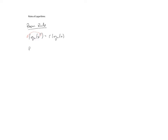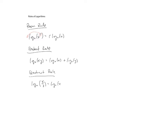The product rule says that if we have log base a of x times y, that this is the same as log base a of x plus log base a of y. The quotient rule for logarithms says something similar: if you have log base a of x divided by y — the quotient of x and y has to give us a positive number, so y can't be zero — that's going to be log base a of x minus log base a of y.